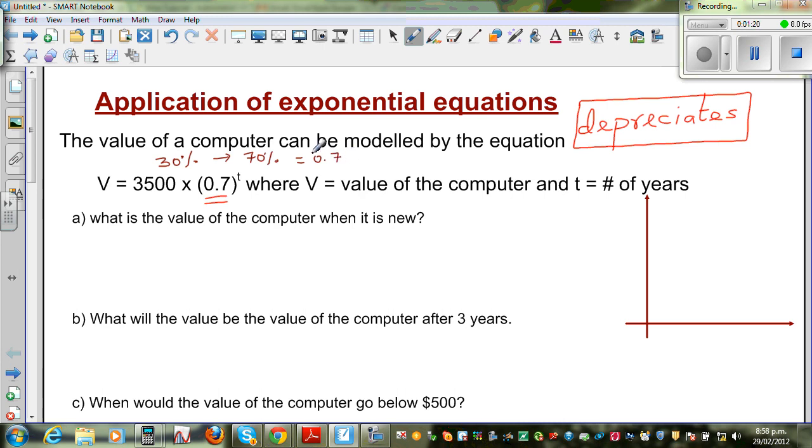if you want to understand this without doing the maths process, the first year, when it starts, when time is 0, when t is equal to 0, your value is going to be 3,500. So we'll write this as v0.